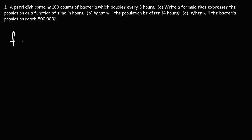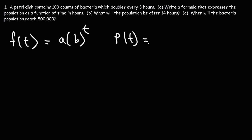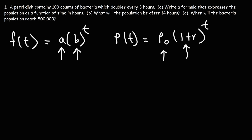There are many ways to write the function. You can say f(t) equals a times b raised to the t. Or you could say p(t), population, is equal to p-initial — that's the initial population — times (1 plus r) raised to the t, or some variation of that. A is the same as p-initial, the initial amount of bacteria. B is the growth factor, which is 1 plus r, and r is the growth rate. T is the time, which could be in hours or in minutes.